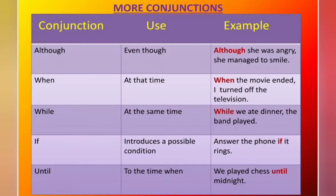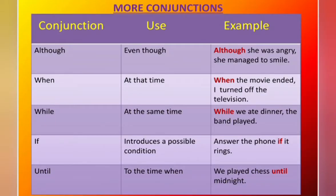Now, we are going to do some more conjunctions. The first is 'although' — it means even though. For example, although she was angry, she managed to smile. Next is 'when' — it means at that time. For example, when the movie ended, I turned off the television. The next is 'while' — it means at the same time. For example, while we ate dinner, the band played. The next is 'if' — it introduces a possible condition. For example, answer the phone if it rings. And the next is 'until' — it means up to the time when. For example, we played chess until midnight.